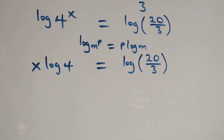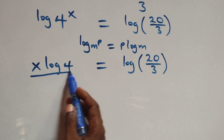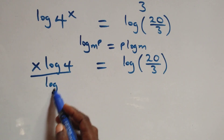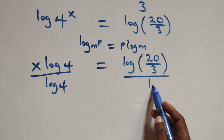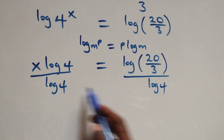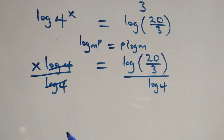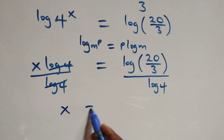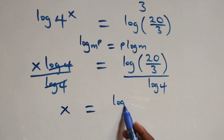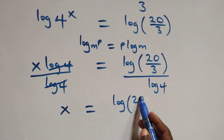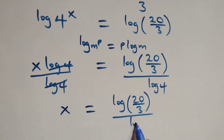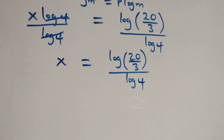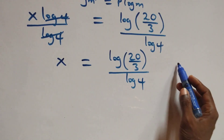We divide both sides by log 4. The log 4 terms cancel each other, and we have x equals to log(20/3) divided by log 4.